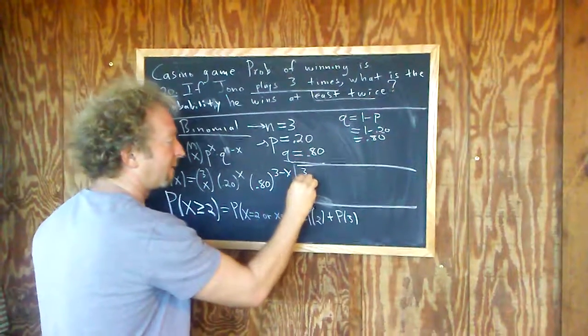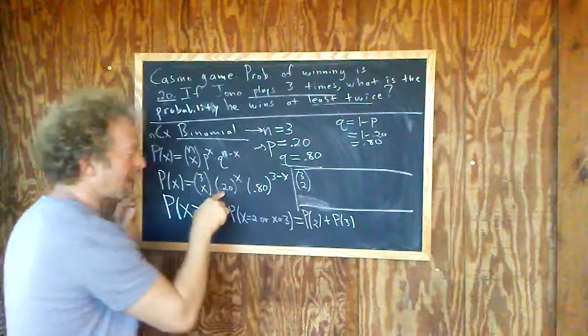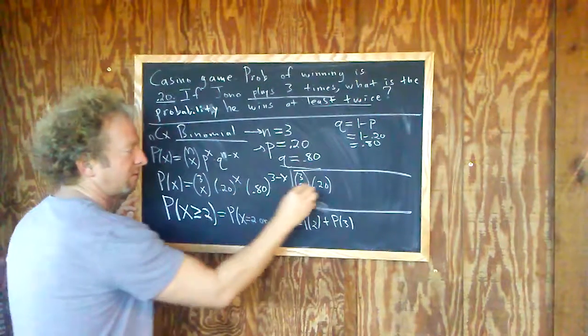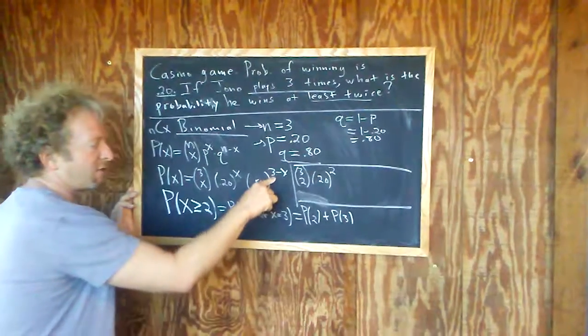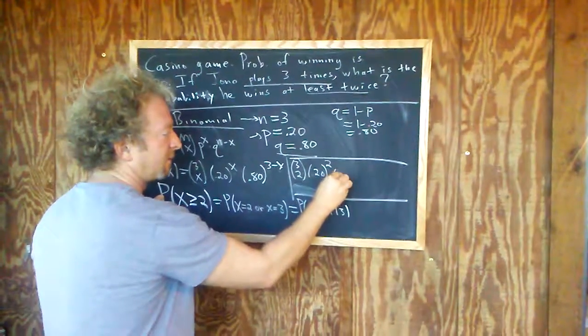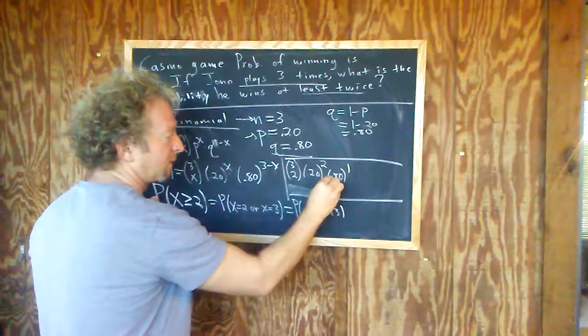So P of two means you plug in the two here. So three choose two. And then we have 0.2 to the two. And then three minus two is one. Right. So it's going to be 0.8 to the one.